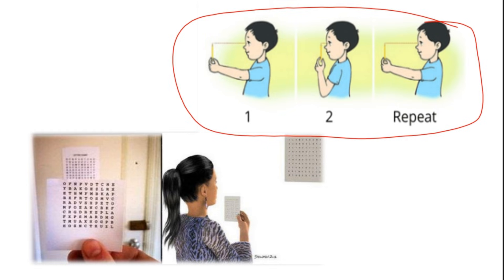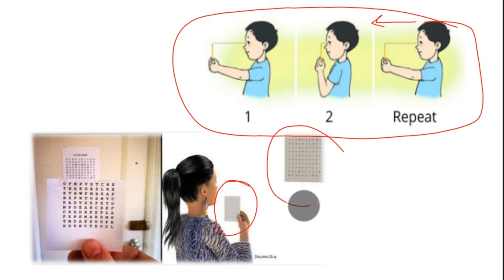The pencil is slowly moved closer until the tip appears double, then pushed far away until it appears single again. This is repeated to strengthen the amplitude of accommodation. In the hart chart exercise, the patient holds a near chart while a distance chart is on the wall, and they alternately focus on letters on the near chart and the far chart.